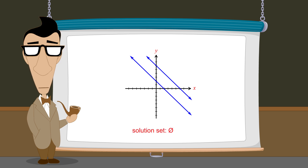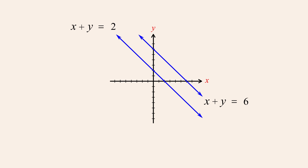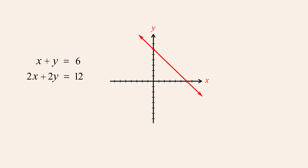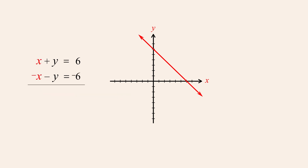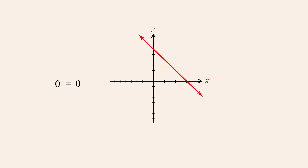Now let's see what happens when solving a system of equations composed of two identical lines. We'll make one equation a multiple of the other so that the two graphs are identical. Using the elimination method to solve this system, we can eliminate a variable by multiplying the bottom equation by negative one-half and then add the two equations. But when we eliminate one variable, every term is eliminated, producing the equation zero equals zero. Obtaining an equation which always must be true indicates that the equations of the system are dependent, and the system is therefore consistent with an infinite number of solutions.